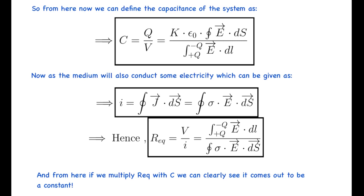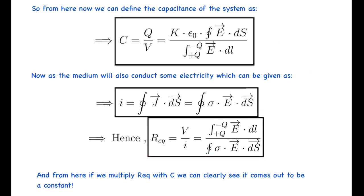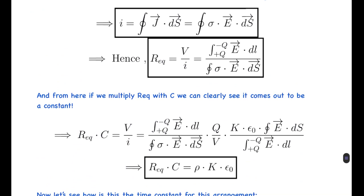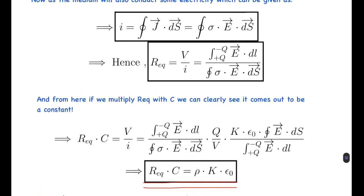So the current becomes the closed surface integral of σE·dS. The equivalent resistance is the potential difference over the current — that is, the line integral of E·dl from +q to −q, divided by the surface integral of σE·dS. Now multiplying R_eq and C, quite a few terms cancel out and we get R_eq × C = ρkε₀, a constant value. This proves that RC is constant and equals ρkε₀.